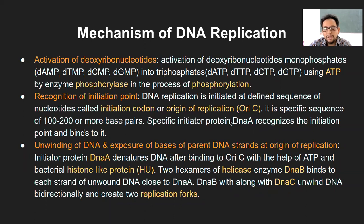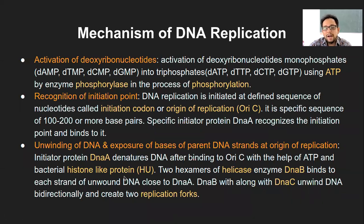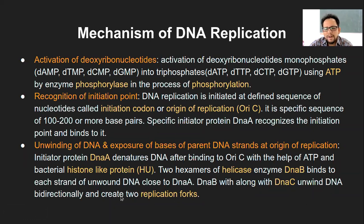After DNA A is located at the OriC, it will further accumulate or localize this histone-like protein, which is a bacterial histone-like protein. And then ultimately it will also invite helicase enzyme DNA B to bind to each strand of the unwound DNA, so that separation of the DNA strands will be done by these helicases. Then another protein DNA C will unwind the DNA bi-directionally and will create two replication forks.